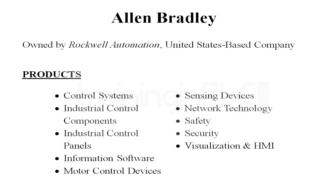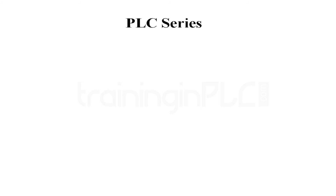These are all the products that come under Rockwell Automation. In this session, we are going to study the control system part, because PLC comes under this part. The control system has three major divisions: micro and nano control systems, small control systems, and large control systems. Moreover, they have five major types: control logic, soft logic, flex logic, compact logic, and drive logic.